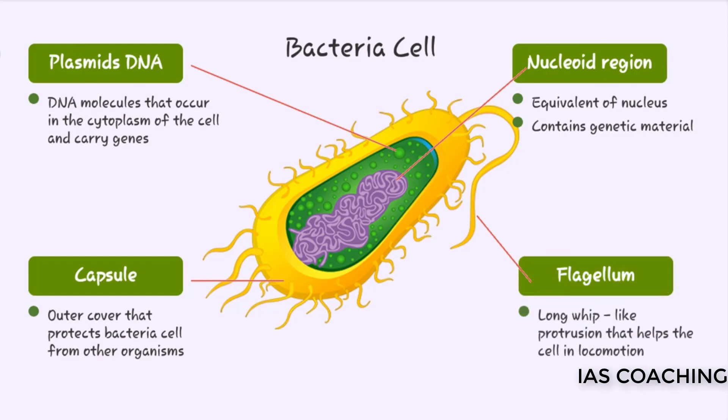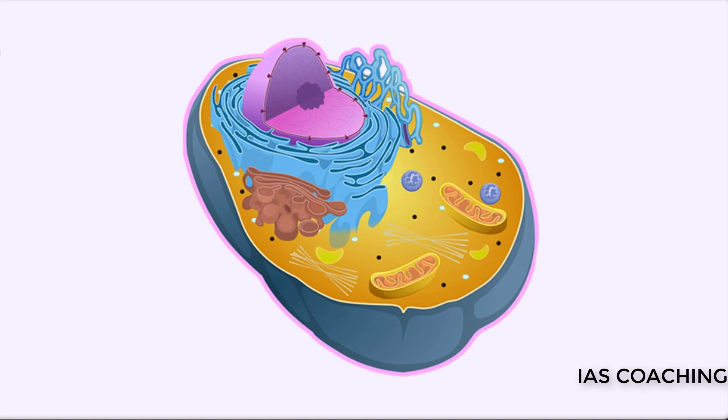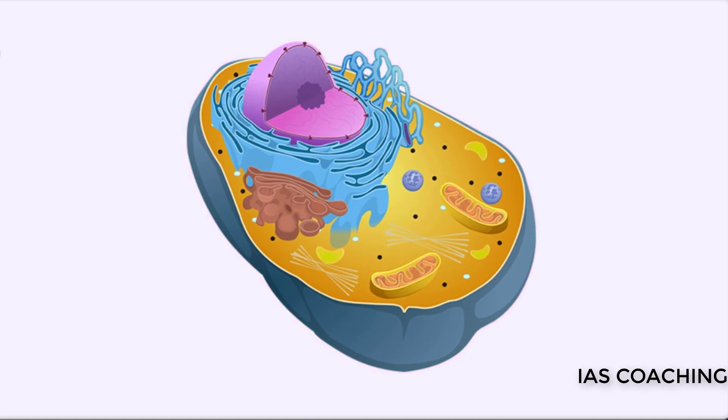The flagellum is a long, whip-like protrusion that aids the cell in locomotion or movement. Now that we have learned about the different organelles of a cell, let's see how they contribute to make the cell fulfill the five basic characteristics of life.